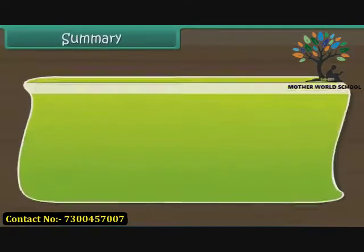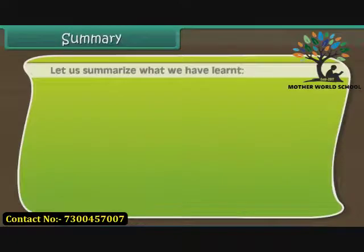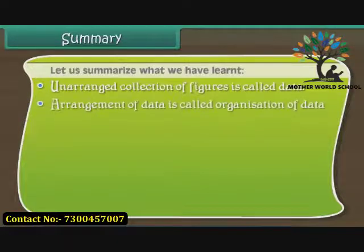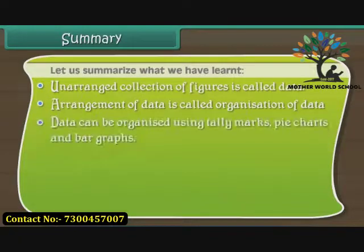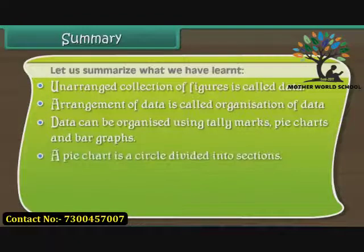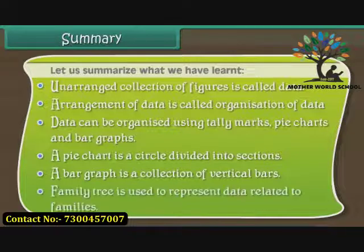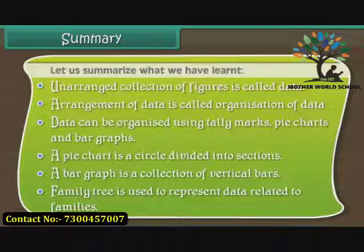Let us summarize what we have learned. Unarranged collection of figures is called data. Arrangement of data is called organization of data. Data can be organized using tally marks, pie charts and bar graphs. A pie chart is a circle divided into sections. A bar graph is a collection of vertical bars. A family tree is used to represent data related to families.